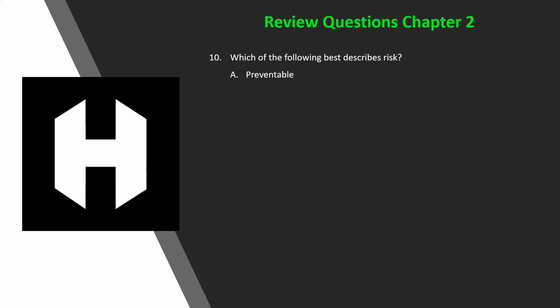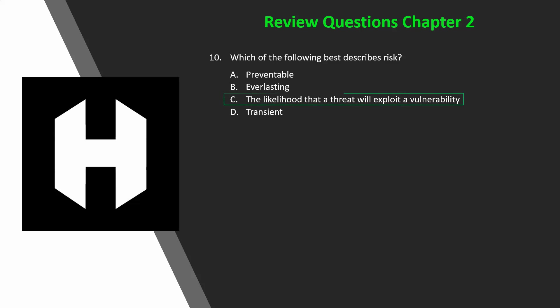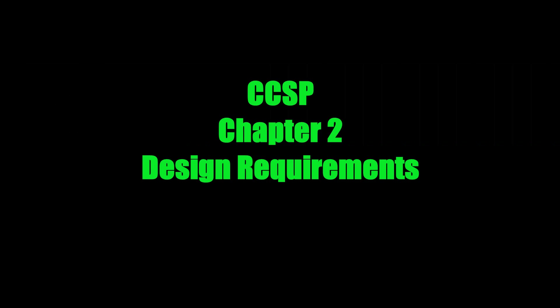Question 10: Which of the following best describes risk? A) preventable, B) everlasting, C) the likelihood that a threat will exploit a vulnerability, or D) transient. If you said C, you would be right — that is the definition of risk. That covers it for Chapter 2! I'll see you in Chapter 3: Data Classification exam essentials and review questions, coming up next.